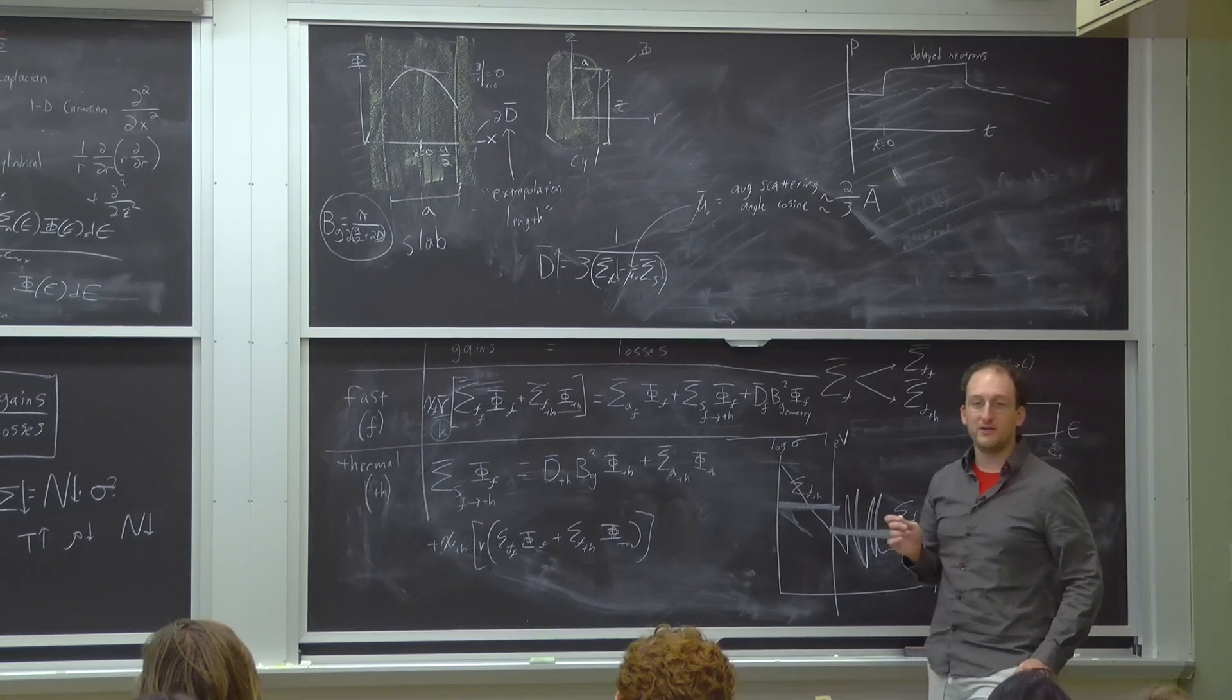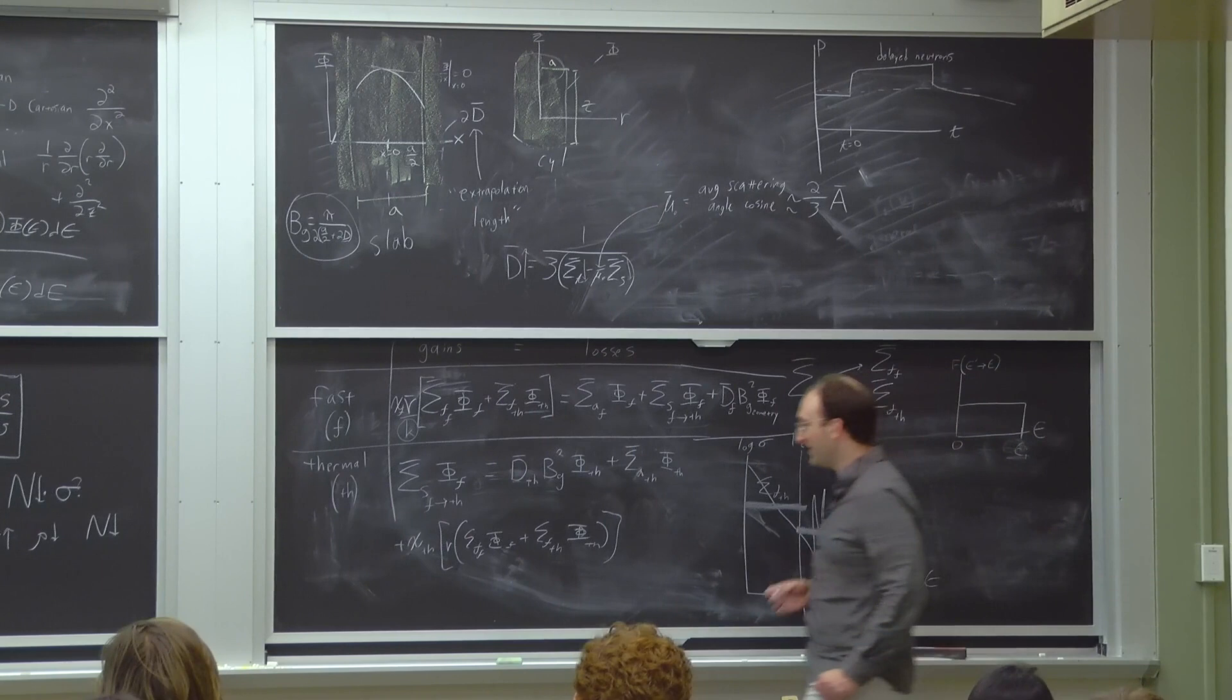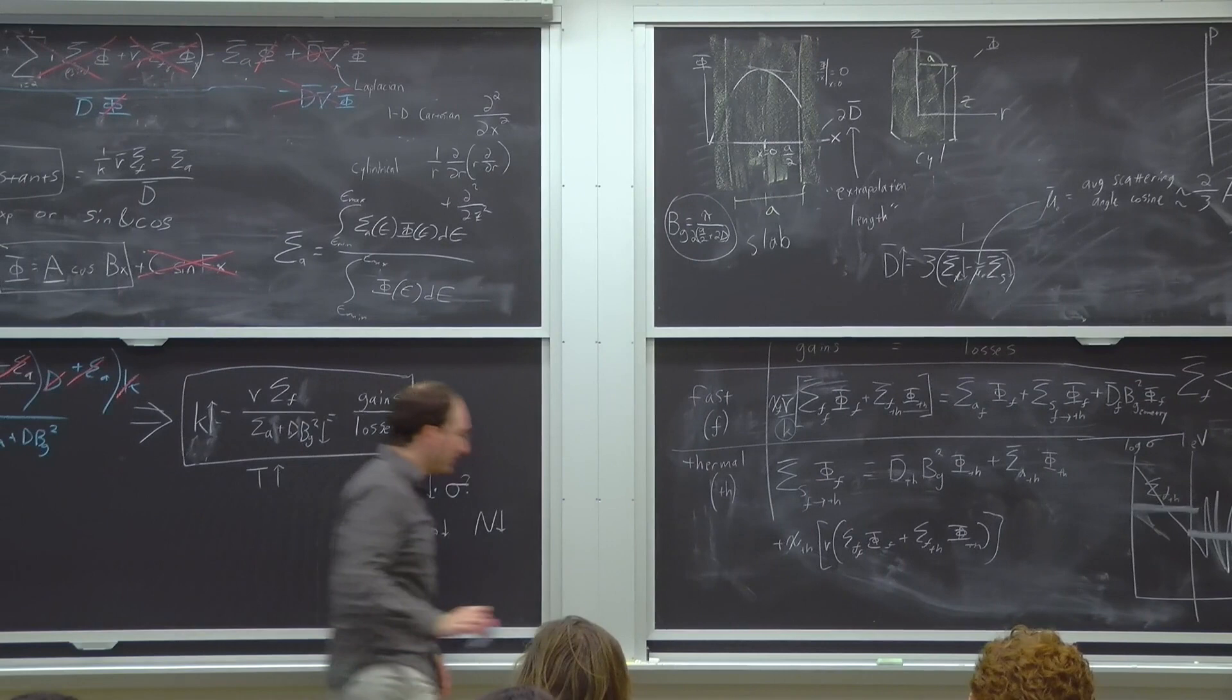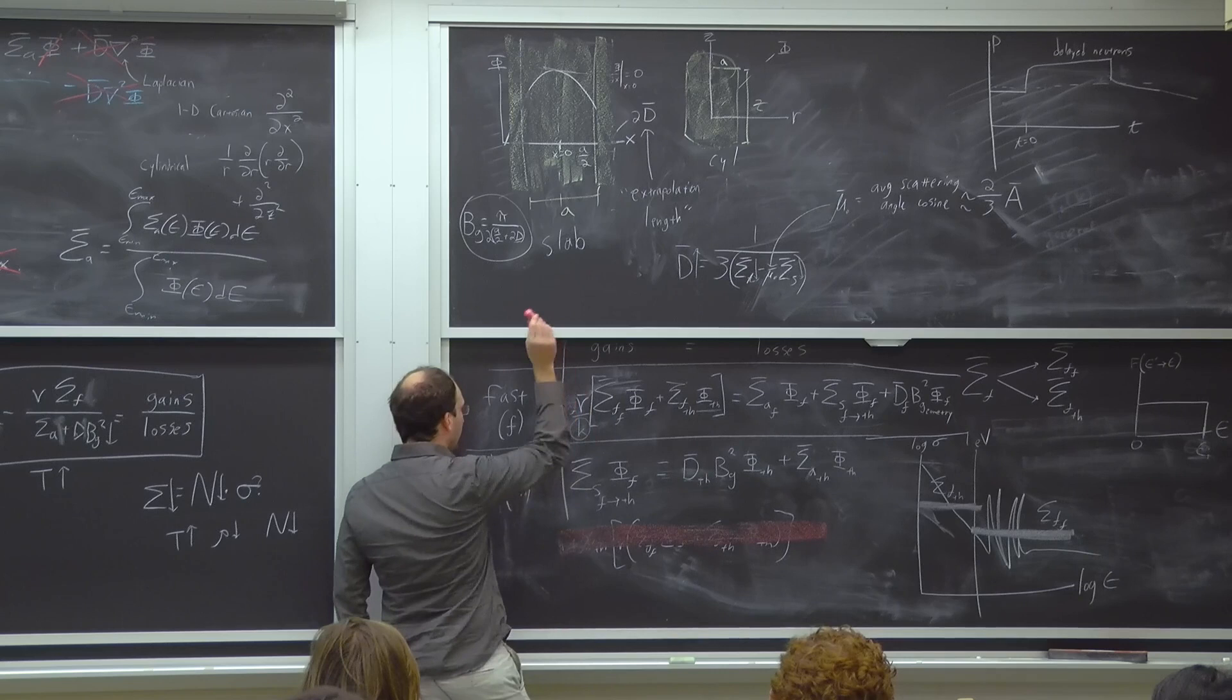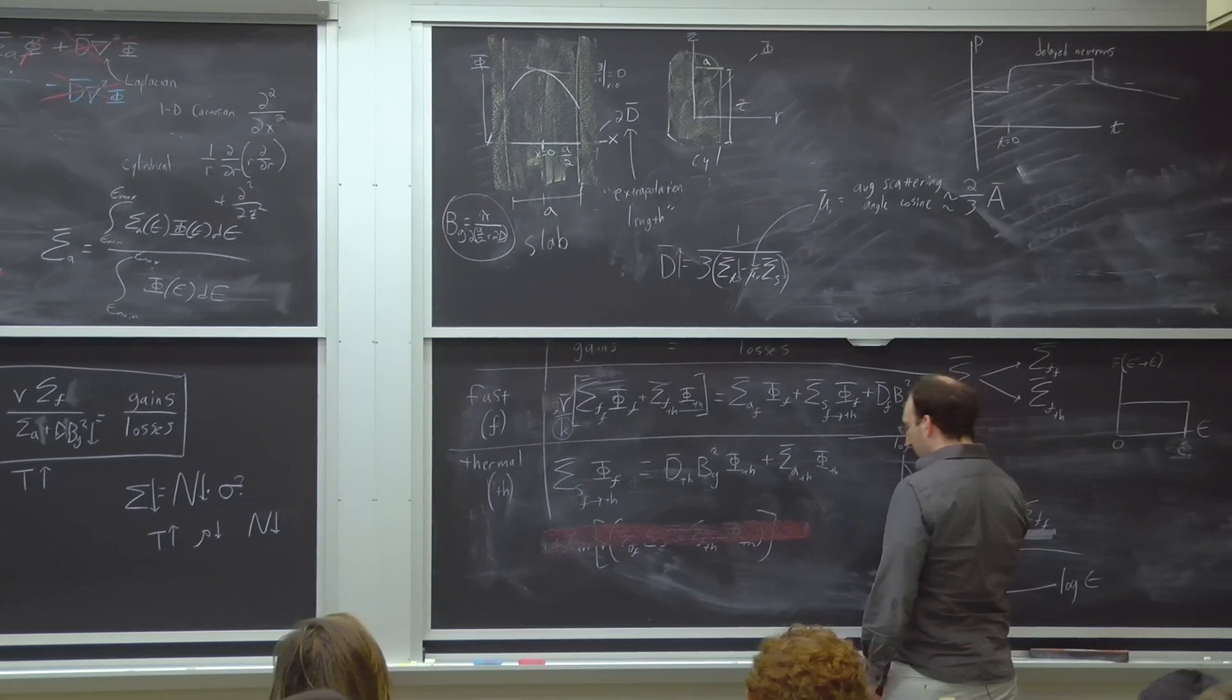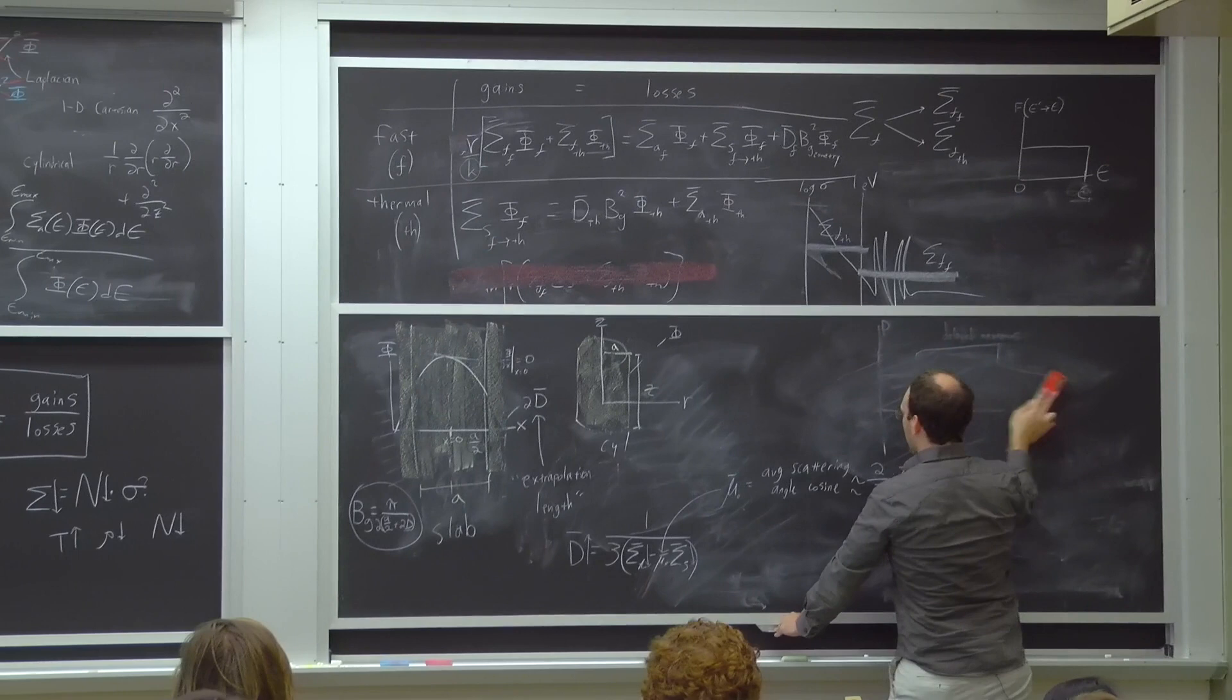Can we assume that all neutrons, including thermal neutrons, are born in the fast spectrum? We know experimentally that they tend to be born between 1 and 10 MeV. But since you asked, let's escalate the problem and then we will de-escalate very quickly. If some neutrons are born thermal, then we would have to add a chi fast here and a chi thermal to say this is the proportion of neutrons born fast or thermal. Doesn't happen much in real life, but great exam question for next year.